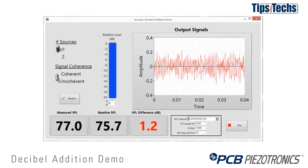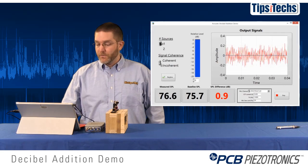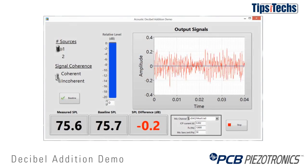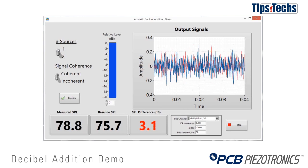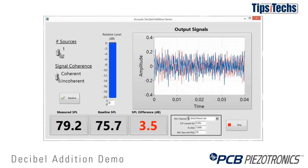Now we'll turn on the second one with incoherent noise and we'll see on the screen that the two signals are different. As expected, we see that 3 dB increase for doubling of incoherent sources.